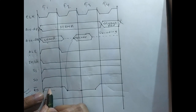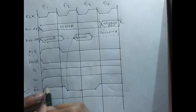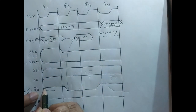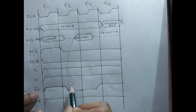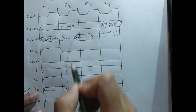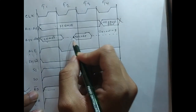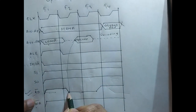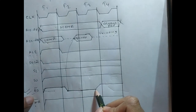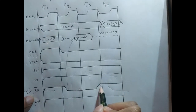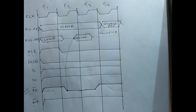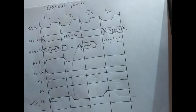To revise: RD̄ is made active high at first because the memory is not yet pointed, so we should not ask for data. When the memory is pointed, we make RD̄ low to request data. We then disable it before T4 because during decoding we do not require data. That's the complete timing diagram for opcode fetch.